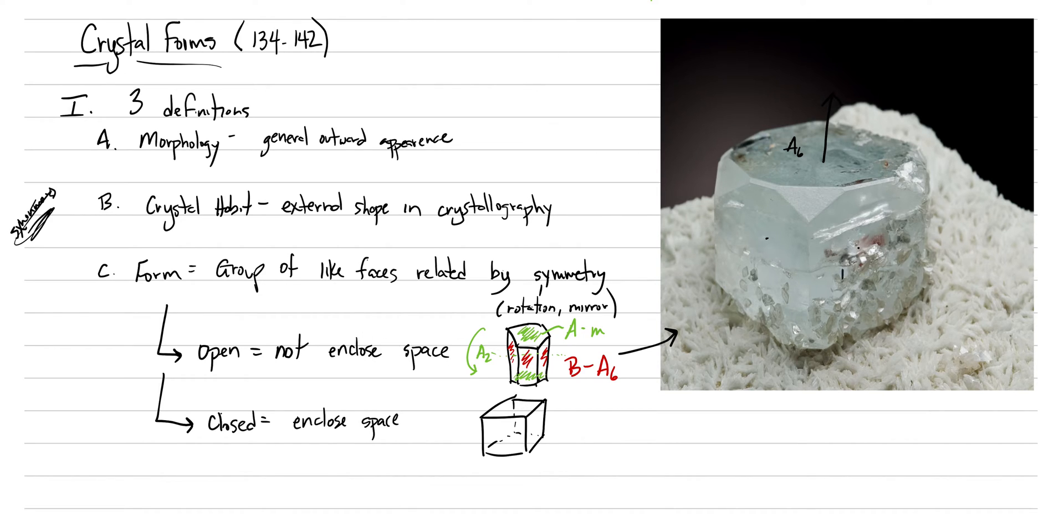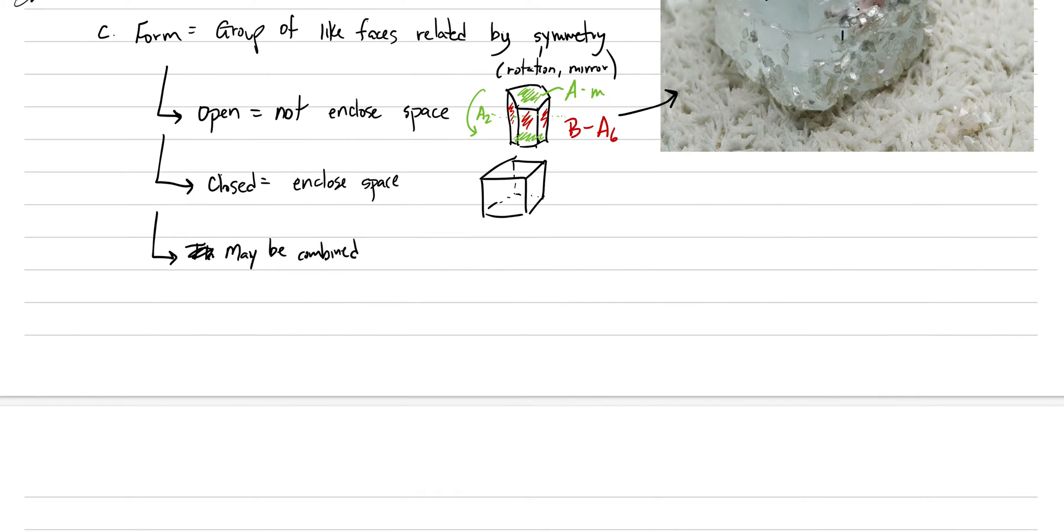Okay, these are examples of open forms. And the whole shape, like this aquamarine, is built of multiple forms. And that's like one more kind of main point about forms, is that they may be combined. Forms may be combined. And in fact, many minerals do show combinations of forms.